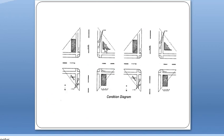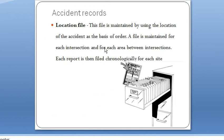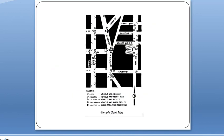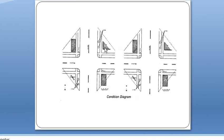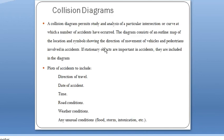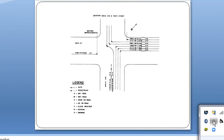To summarize, the different types of methods for recording accidents are: location file, spot map, condition diagram, and collision diagram. The location file is maintained by location in chronological order; the spot map indicates the area where accidents occur and type of accident; the condition diagram highlights the physical features and visibility of drivers at intersections; and the collision diagram indicates direction of movement, date, and other details. I am ending today's lecture - please read the textbook and I will share the PPT later.